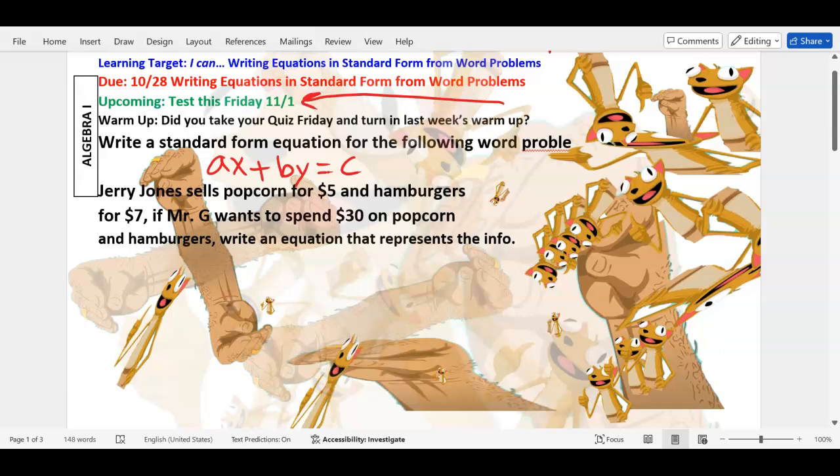When there's two items, we use standard form. We need to find our X and Y. Popcorn is X, hamburgers is Y. What's our total? Mr. G wants to spend thirty dollars on popcorn and hamburgers, so thirty dollars is gonna equal...